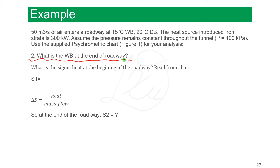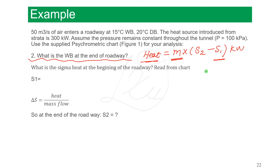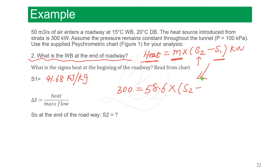The second question is: what is the wet bulb temperature at the end of the roadway? We know that heat equals mass flow rate multiplied by the change in sigma heat. In this problem, we know the heat is 300 kW, we know the mass flow rate is 58.6, and we have found the sigma heat at the beginning of the roadway, S1 = 41.68. So: 300 = 58.6 × (S2 − 41.68), and solving gives S2 equals 46.8 kilojoules per kilogram.